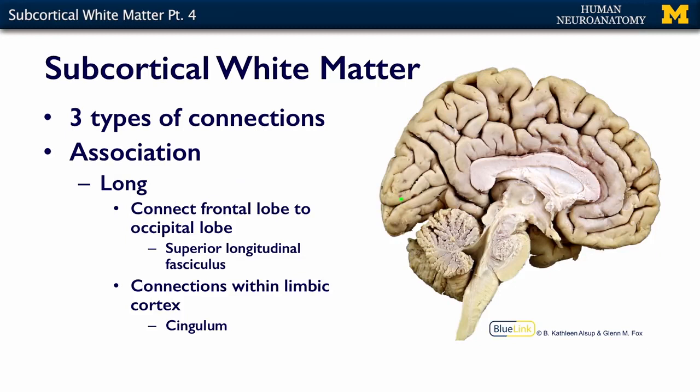As I mentioned, association fibers can be long or short. Some examples of long association fibers would be a connection between the frontal lobe and the occipital lobe — fibers running generally from front to back and back to front within the same fiber bundle called the superior longitudinal fasciculus.